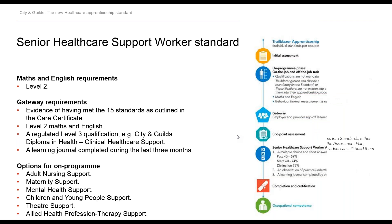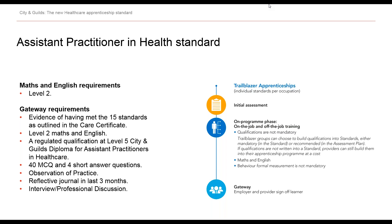Looking at the Assistant Practitioner in Health Standard, we're looking at maths and English requirements at Level 2 as part of the gateway, and again a mandatory qualification as described previously. City and Guilds is applying to the Register to become an Endpoint Assessment Organisation for this standard this month. The expectations regarding the Endpoint Assessment include a multiple choice questionnaire and four short answer questions, an observation of practice, a reflective journal in the last three months, and then an interview.